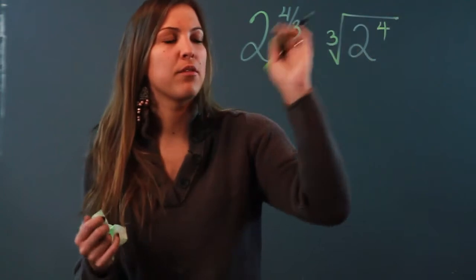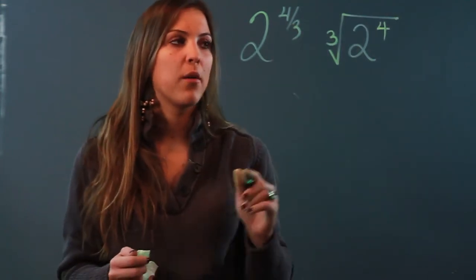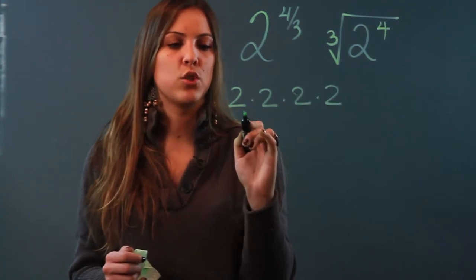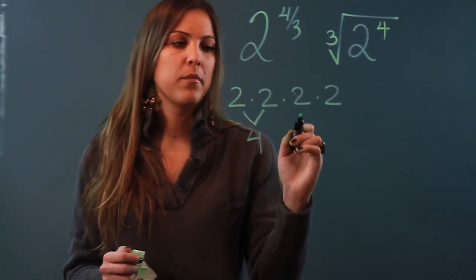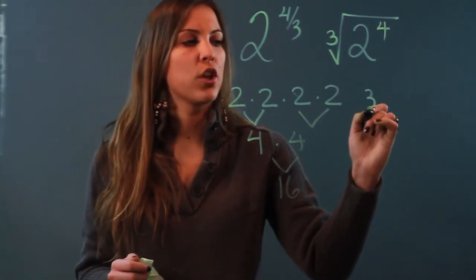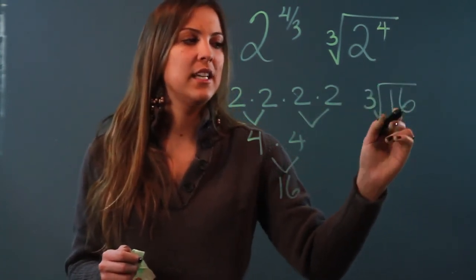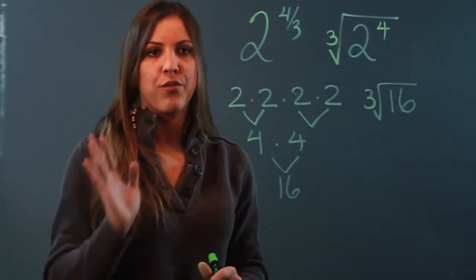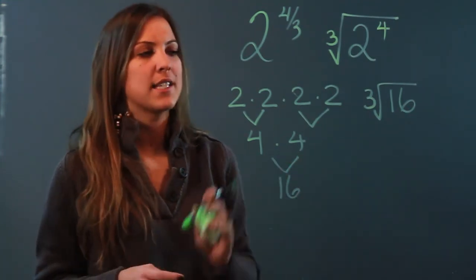So then I can simplify inside. 2 to the 4th power is 2 times 2 times 2 times 2. So 2 times 2 is 4, times 4 is 16. So I'm looking for the cube root of 16. In this case I can leave it like that because I can't think of a number that I multiply by itself three times to get 16. So that's as simplified as it'll get.